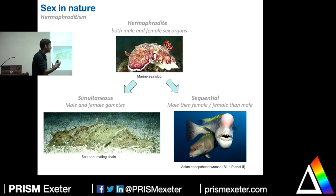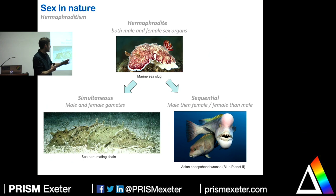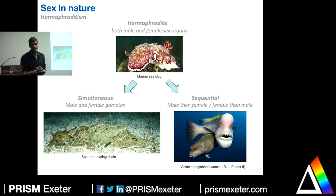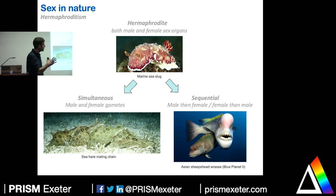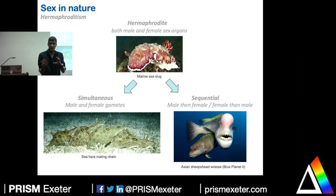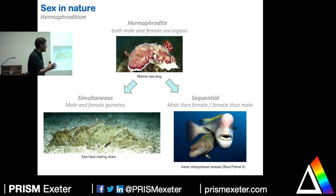Conversely, there are sequential hermaphrodites. A really good example showcased by BBC's Blue Planet 2 is the Asian sheepshead wrasse. There's a large dominant male at the top of the social hierarchy, below which are all females. When that male's reproductive output diminishes, the largest female will change sex to male, challenge the dominant male, and if it can oust it, the previous dominant male is ostracized and that new male takes the optimal position in the hierarchy. This has really important implications both for the reproductive output of the individual and of the population more generally.